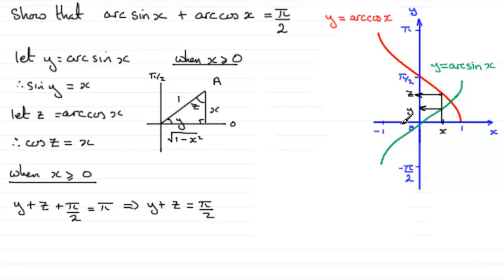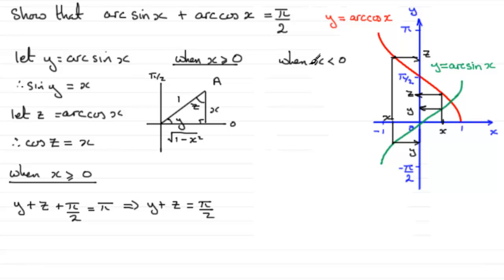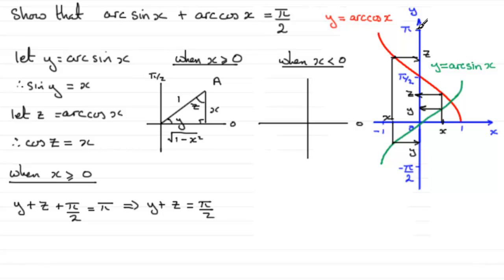So let's have a look now at when x is a negative number between 0 and minus 1. Let's say we put our value of x over here. If x is a negative number, there's going to be this y value on arc sine x and this z value up on arc cos x. We'll look at when x is less than 0. If we draw our quadrant diagram, with 0 radians here, let's look at z first — it's going to be an obtuse angle, between pi upon 2 radians and pi radians, meaning it's in the second quadrant.